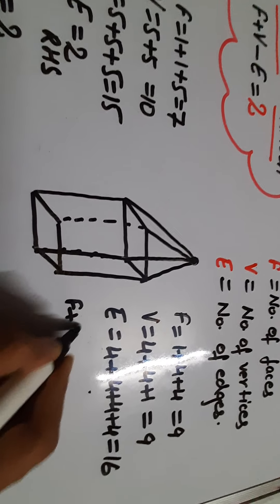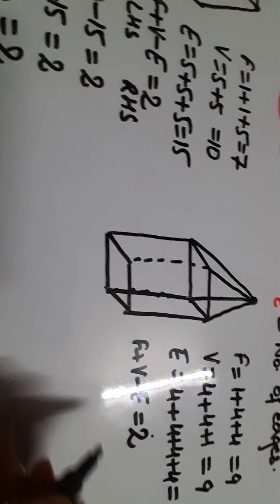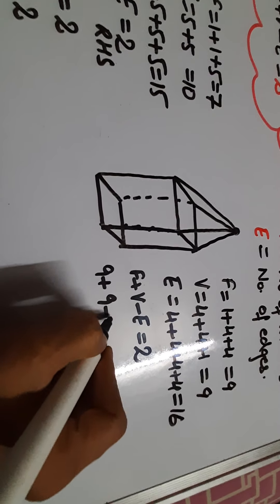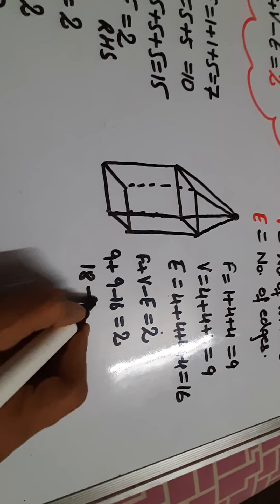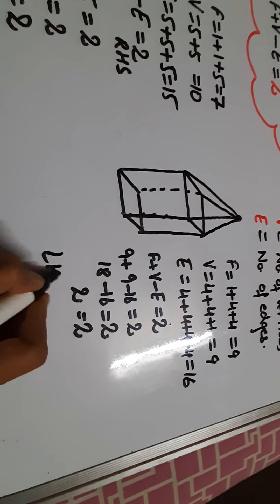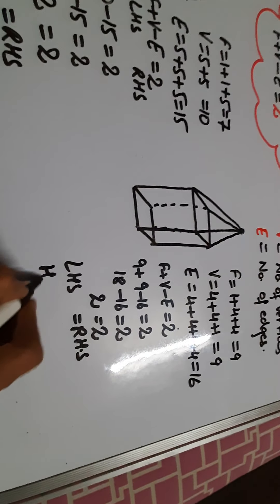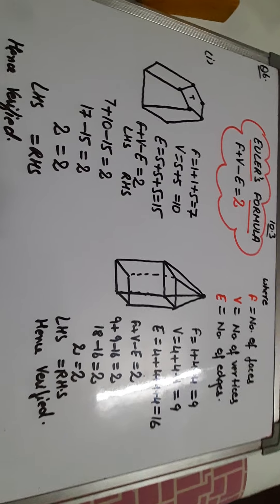Now let us verify the formula. F plus V minus E is equal to 2. Let us put the value - F is 9, vertices 9, minus 16 is equal to 2. Nine plus nine is 18 minus 16 is equal to 2. So 2 is equal to 2, that means left-hand side is equal to right-hand side. Hence verified.